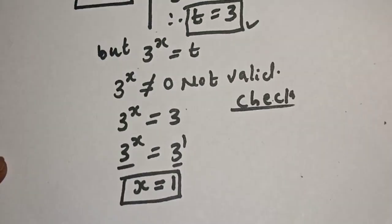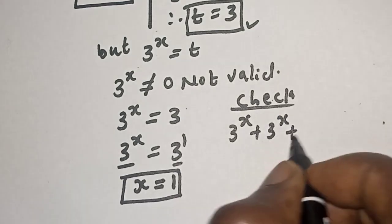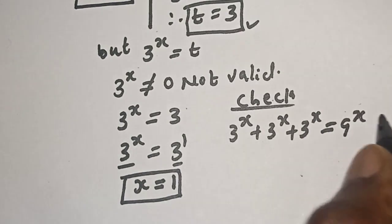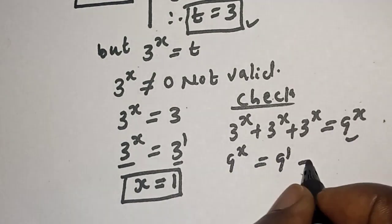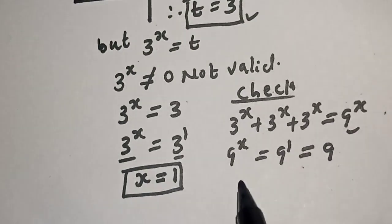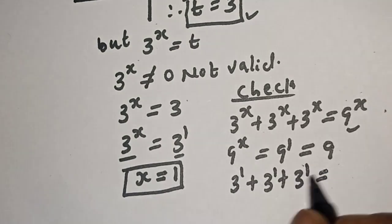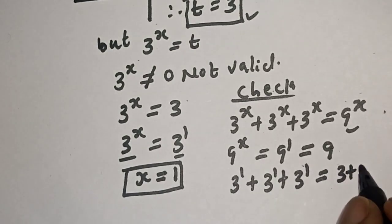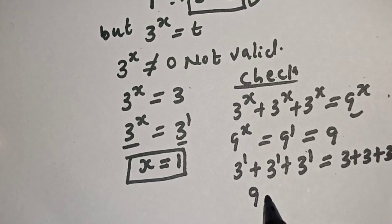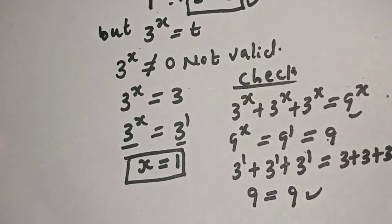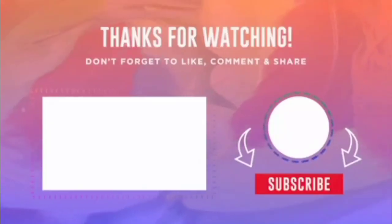Let's check: the given equation is 3 raised to power s plus 3 raised to power s plus 3 raised to power s equals 9 raised to power s. When s equals 1, the right-hand side gives 9 raised to power 1, which is 9. The left-hand side gives 3 plus 3 plus 3, which equals 9. This satisfies the given equation at s equals 1. If you enjoyed the class, please don't forget to like, share, comment and subscribe. Thank you.